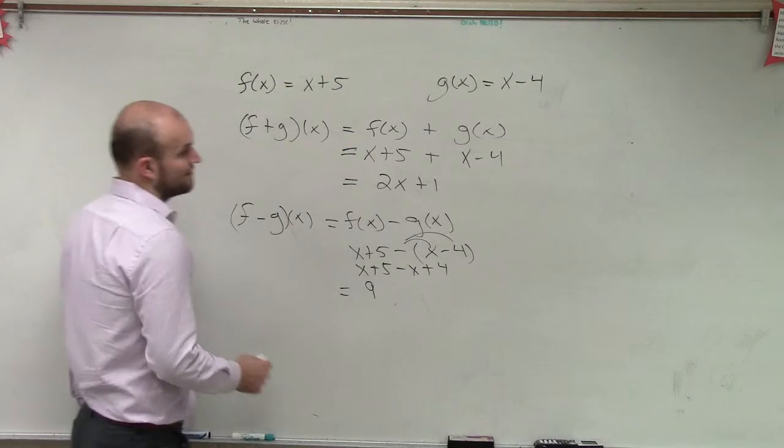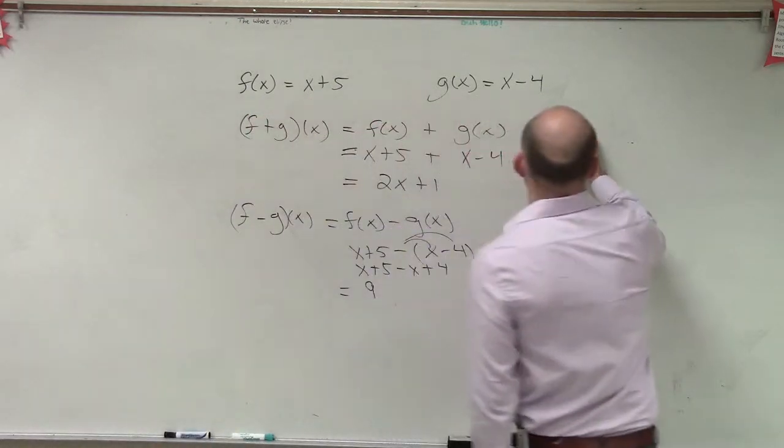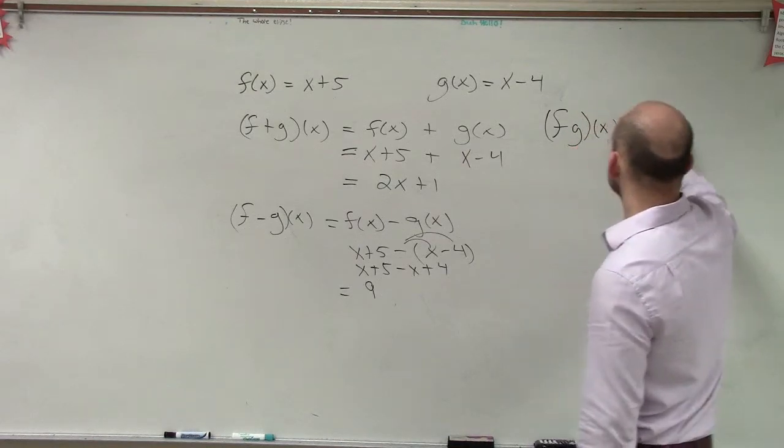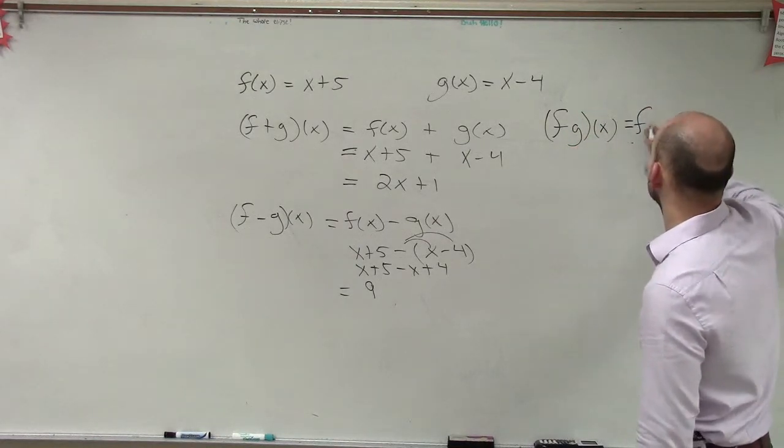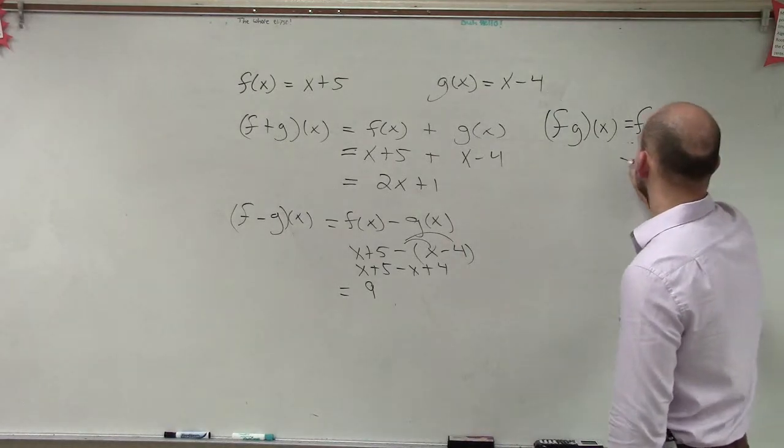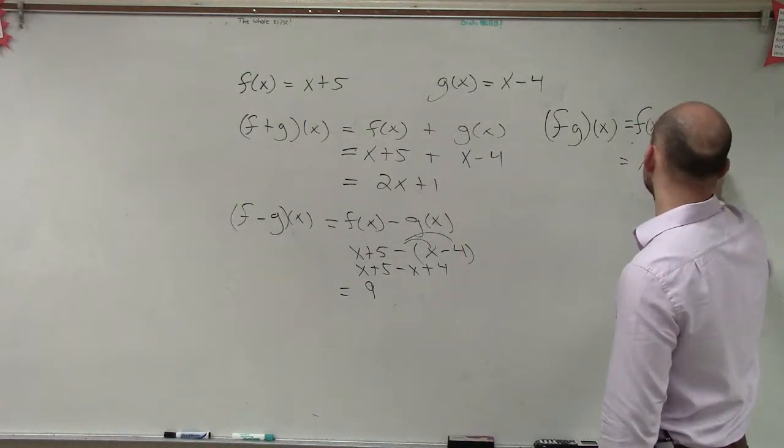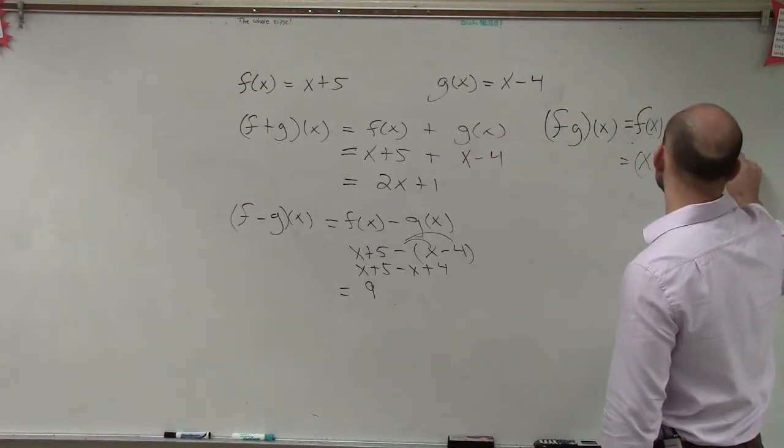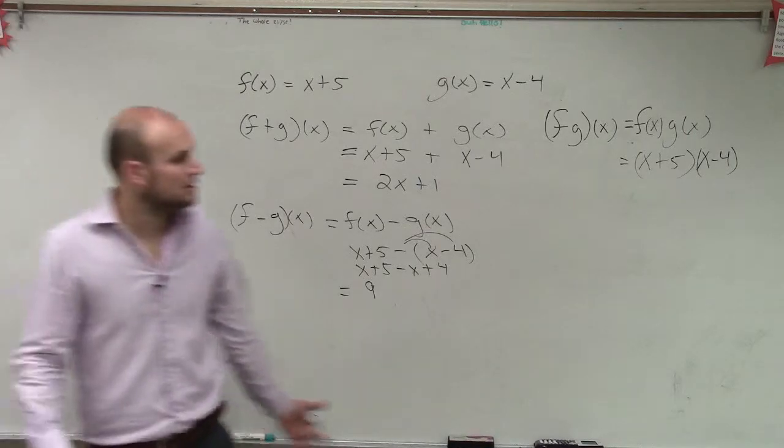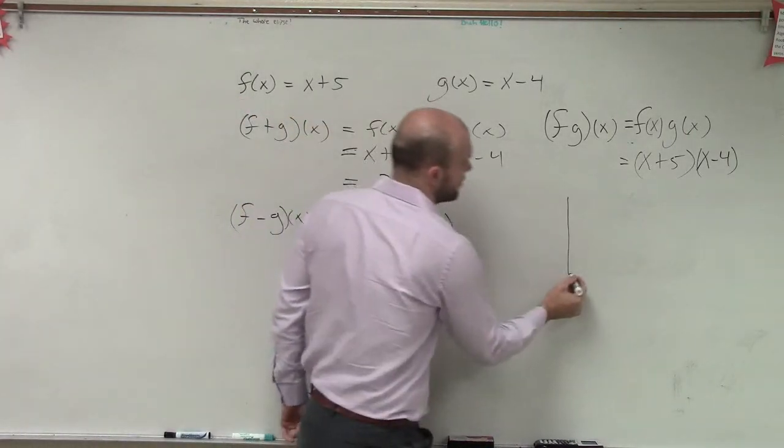Then let's do f of x times g of x, which just means f of x times g of x. Which equals x plus 5 times x minus 4. Now, ladies and gentlemen, remember, when you're multiplying binomials, you guys can use the FOIL method.